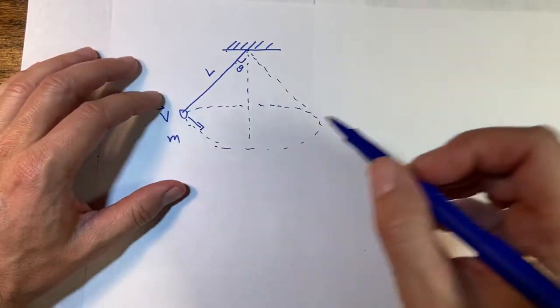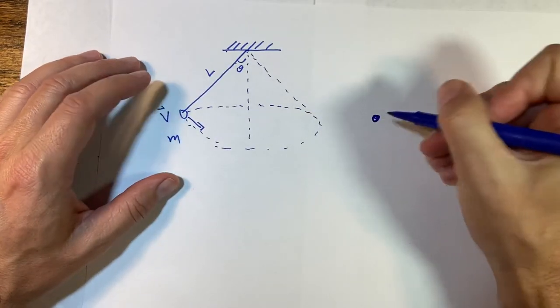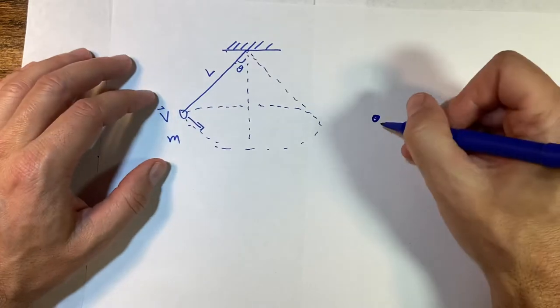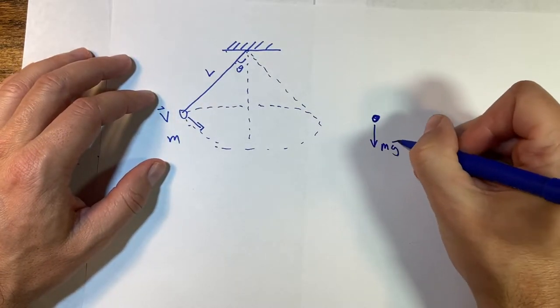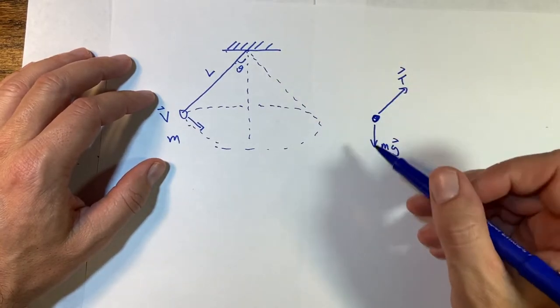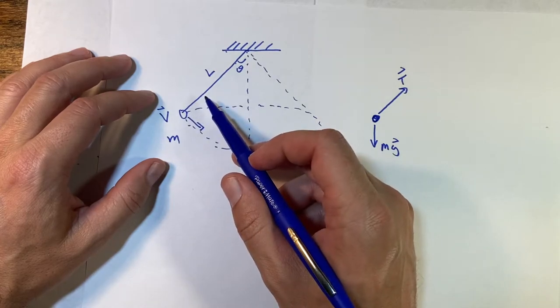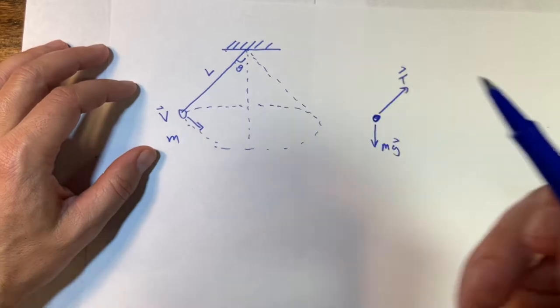So the first thing I want to do is to look at this instant right here and draw a force diagram. What is acting on this mass? I have the gravitational force that's down mg and then I have the tension in the string. Remember the tension is a constraint force, so it can only pull in the direction that the string is and we don't know the magnitude. It could be literally anything.